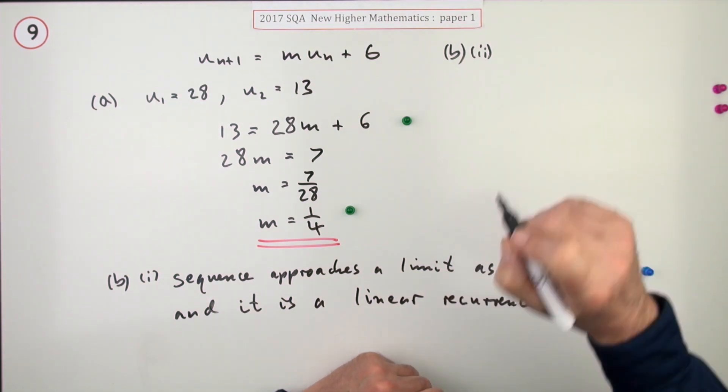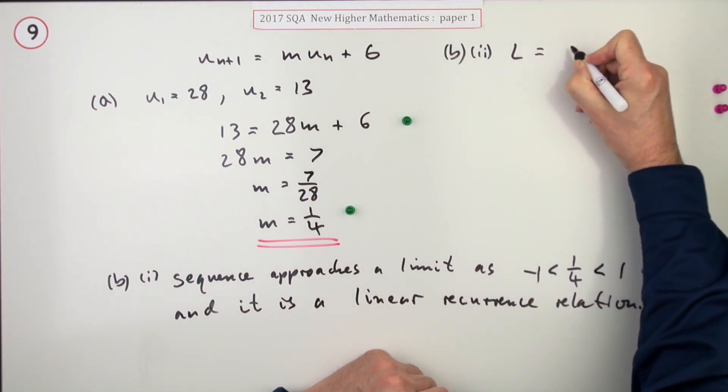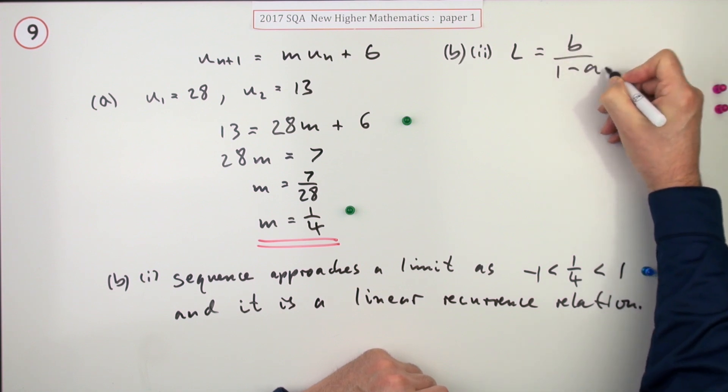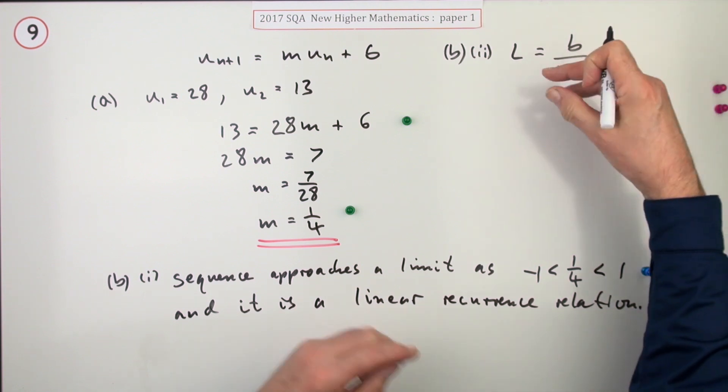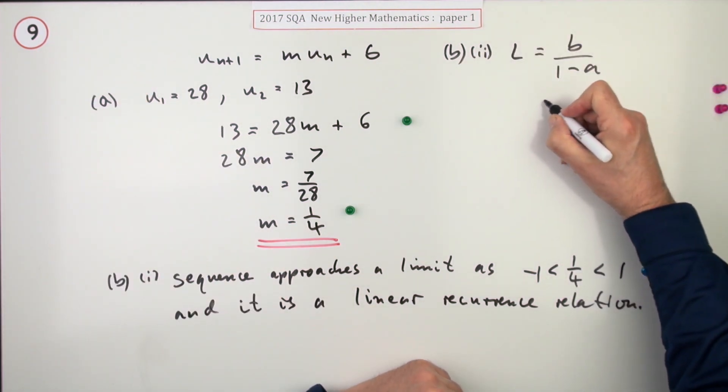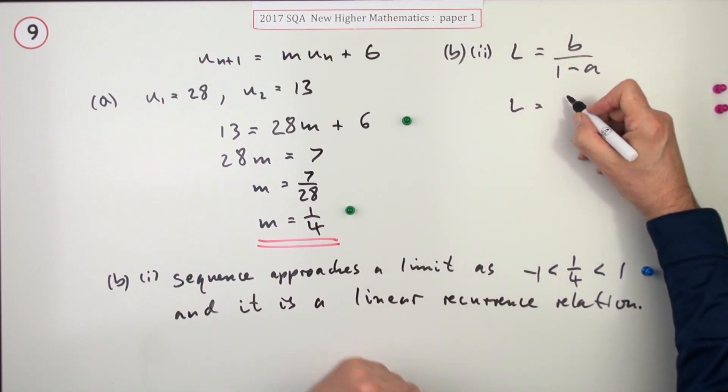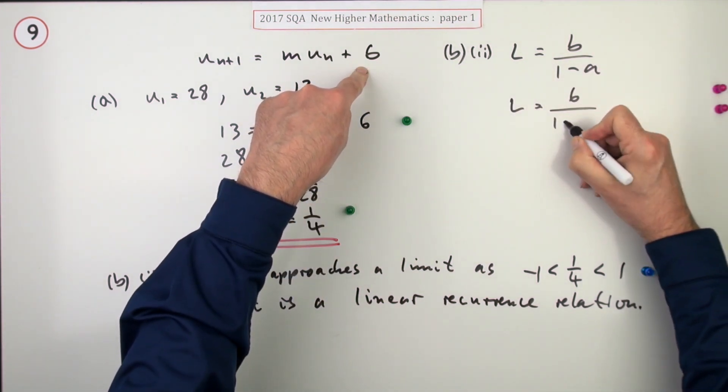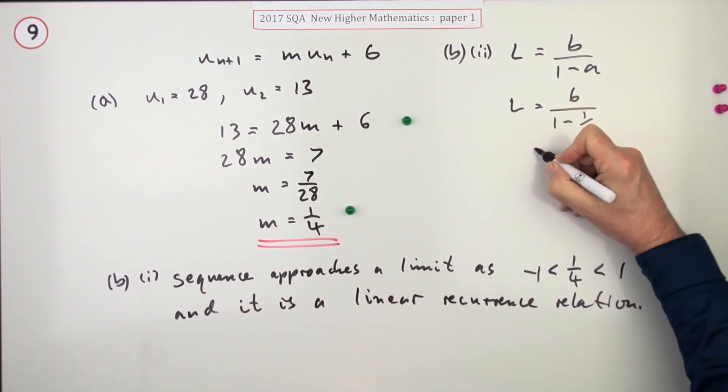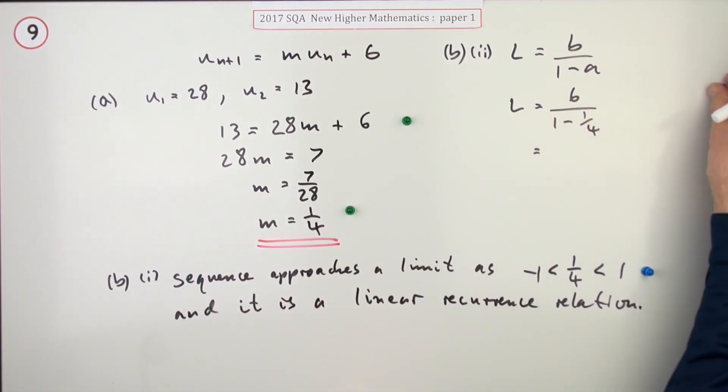Well, there's two ways you can go in with that. You're going with the formula. L equals B over 1 minus A, for which you'll get no marks. Because what are these A's and B's? If you do that, you get the mark once you start putting in the figures. B is the 6 and A was the quarter. If you write that down, you get the first mark. And then the next mark's just for evaluating that.